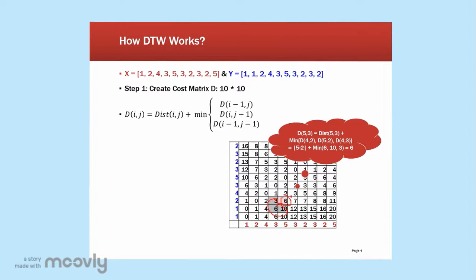So you add up the difference, which is 5 minus 2, which is 3. And then the minimum, which is also 3. And then the answer is 6. So you fill in 6.